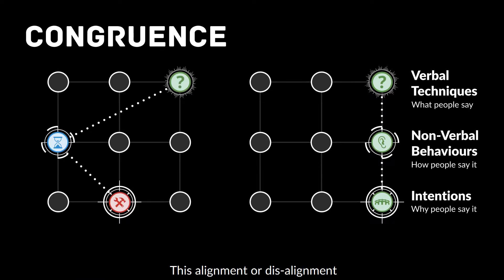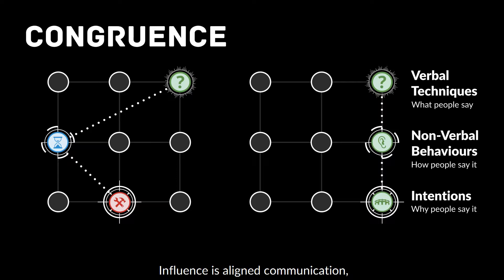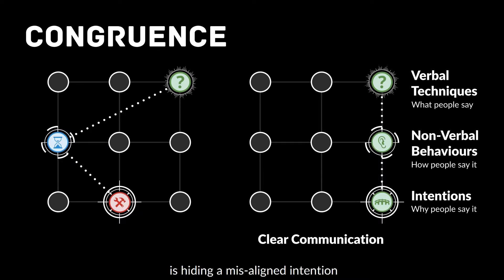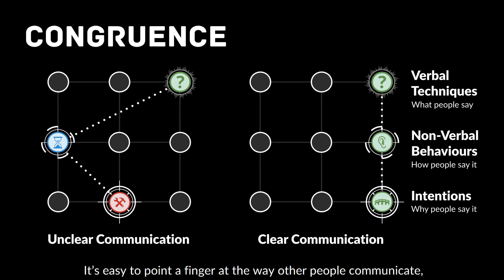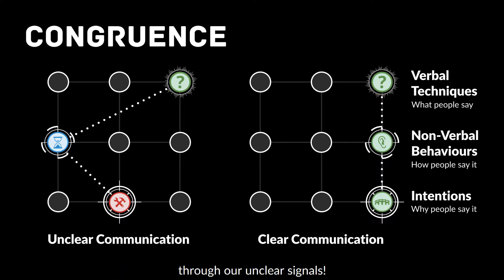This alignment or disalignment is one of the ways that we can detect the difference between manipulation and influence. Influence is aligned communication, which makes things much more clear. Whereas manipulation is hiding a misaligned intention behind unclear communication. It's easy to point a finger at the way other people communicate, but let's first remember that we can all unconsciously confuse people through our unclear signals.